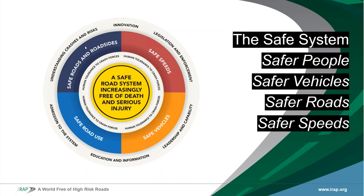At the centre of how we think about road safety in IRAP is what's become known as the Safe System. This is possibly the leading philosophy about how to manage safety worldwide, with foundations in Vision Zero from Sweden and Sustainable Safety from the Netherlands. It emphasises the need for safer people, safer vehicles, safer roads, and safer speeds. You can't achieve a completely safe system without focusing on each of those four elements — we can build safe roads but we need people to behave safely, travel in safe vehicles, and travel at safe speeds.